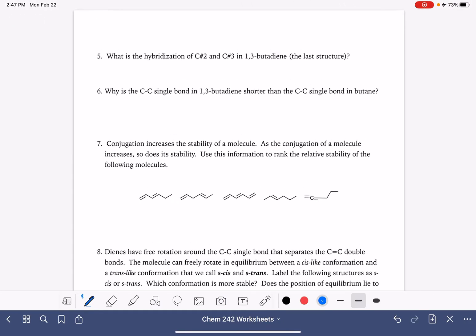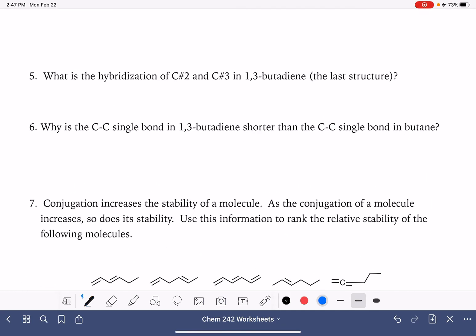So now we're being asked the same type of question about hybridization for butadiene. I'm going to draw that butadiene right here, looking at carbon number two and also carbon number three. This is carbon with one, two, three areas of electron density. So that makes it an sp2 hybrid.